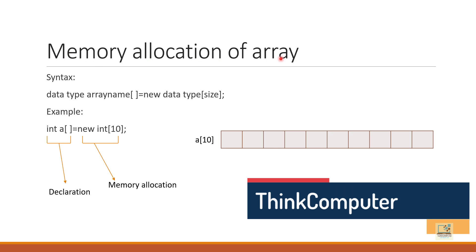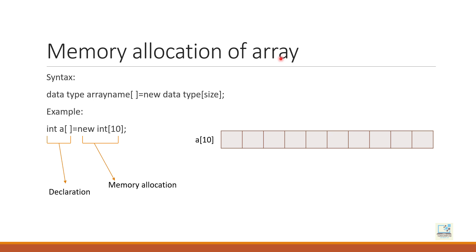Now let's talk about memory allocation of array. Just by declaring the array, it will not occupy any memory. If you need to actually create the array in the memory, you need to allocate memory, and for memory allocation the new operator is used. You are already familiar with the new operator — you must have used it while taking input using BufferedReader or Scanner. It is also used when we are allocating memory for any array, whether it is a 1D array or 2D array. The syntax is: data type, array name, bracket, equal to, new, data type, and size. The left-hand side is the declaration part and the right-hand side is the memory allocation.